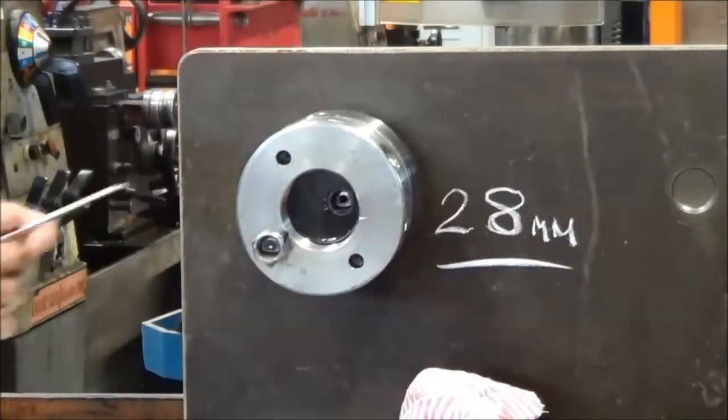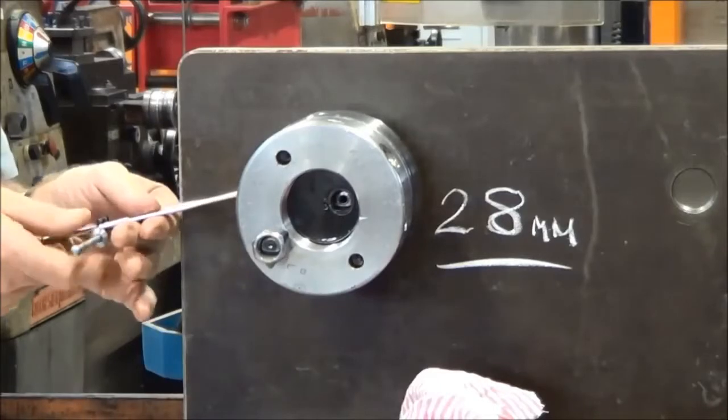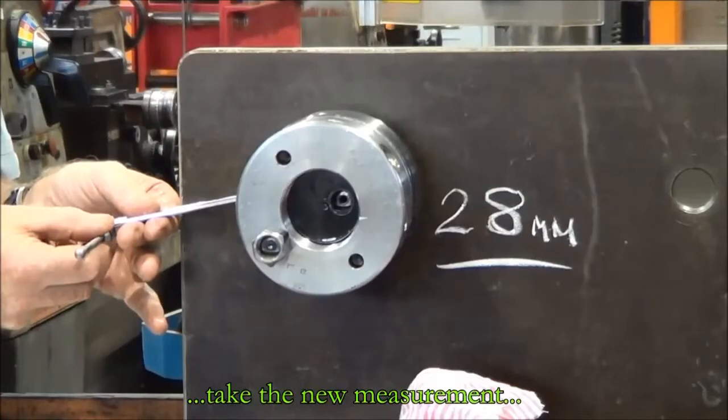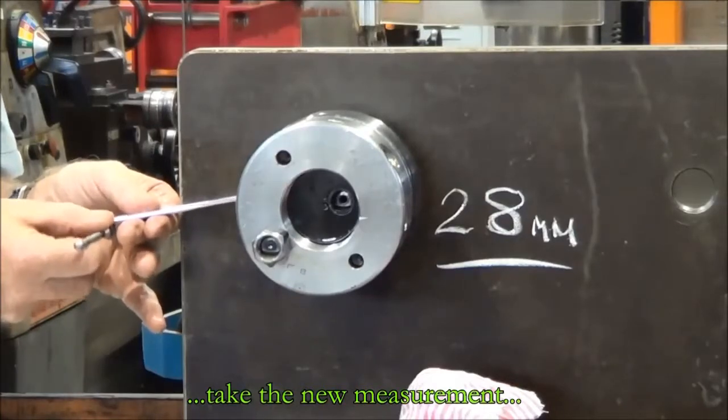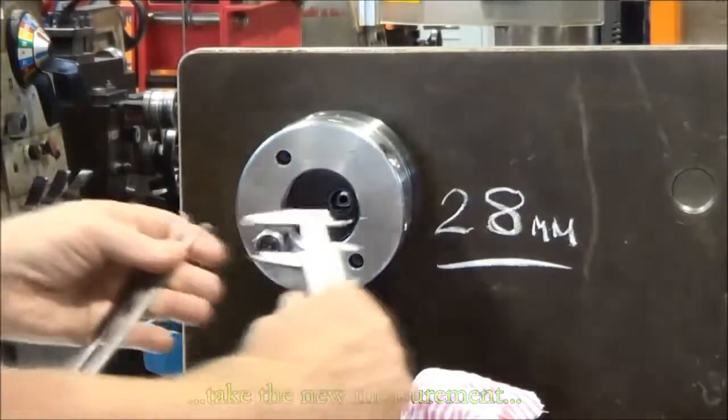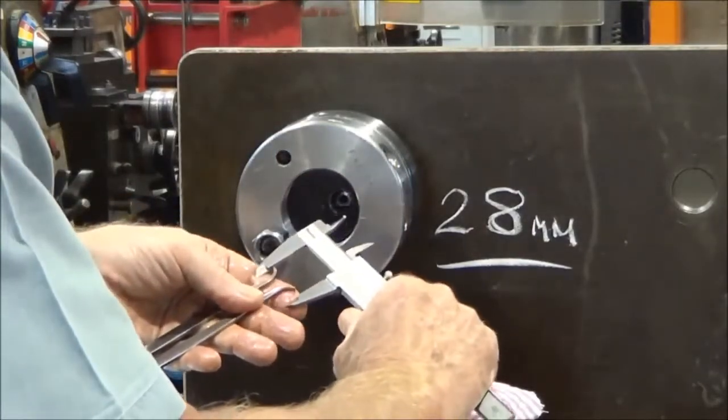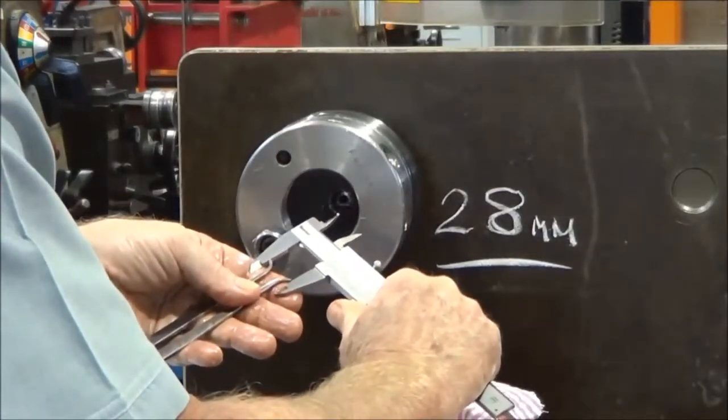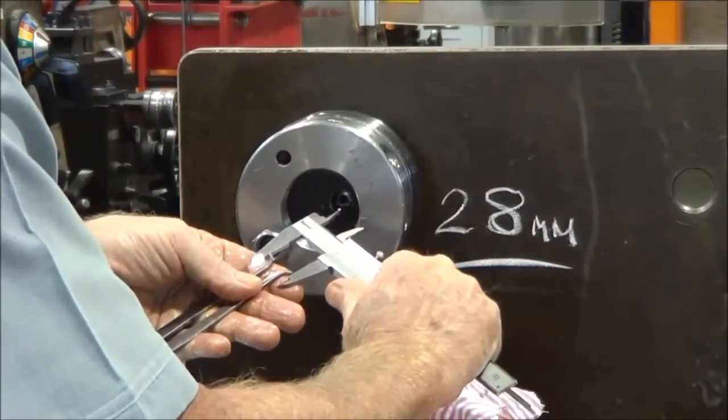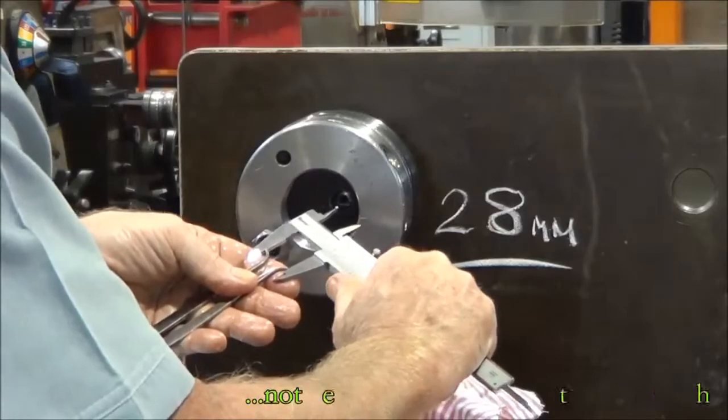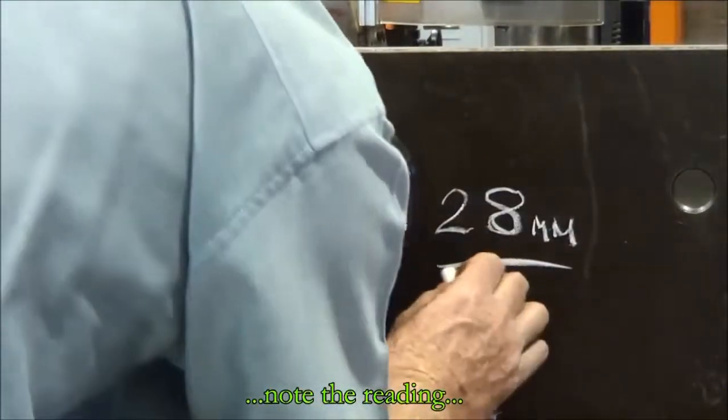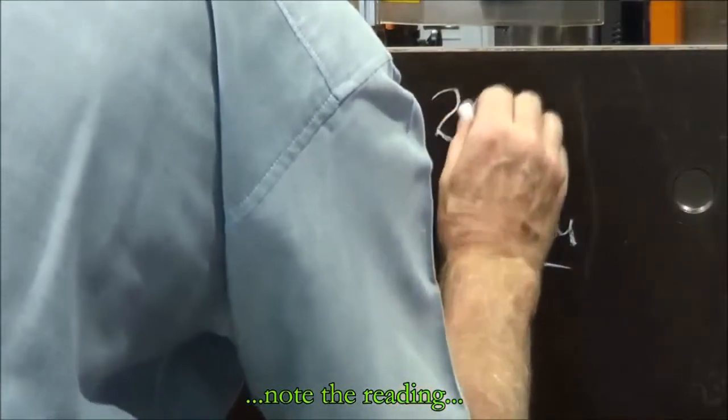Now we just take a reading of where the bearing is positioned now. Write down what the new reading is. 27.5.